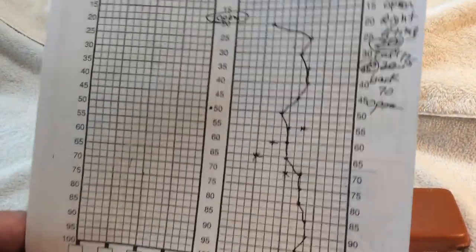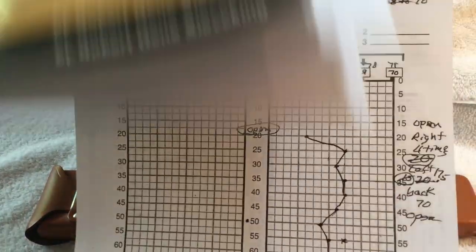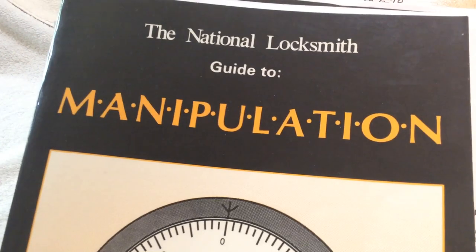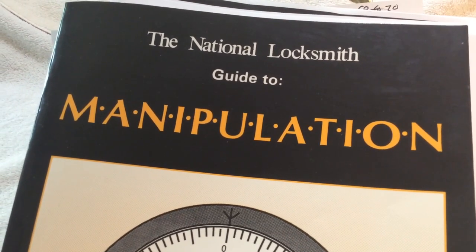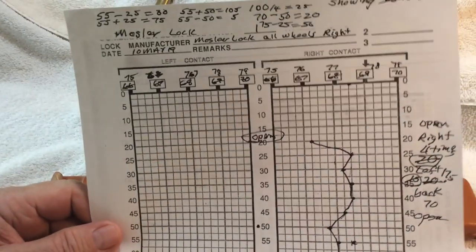We turned all wheels to the right, and this chart comes out of this book. I think I showed this to you yesterday too. It's National Locksmith Guide to Manipulation, and this chart comes out of there.